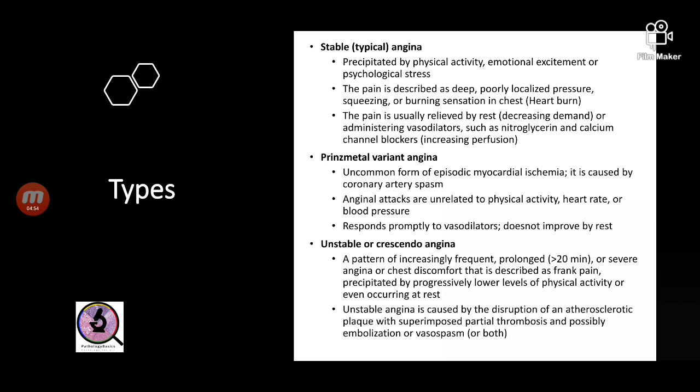Prinzmetal angina is an uncommon form of angina caused not by luminal narrowing but by vasospasm. The attacks of pain are unrelated to physical activity, not related to heart rate or blood pressure, and will not be relieved by rest — it is treated only by vasodilators.